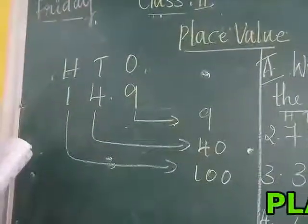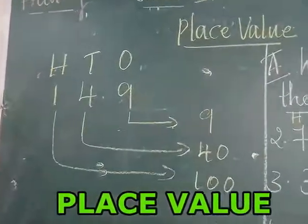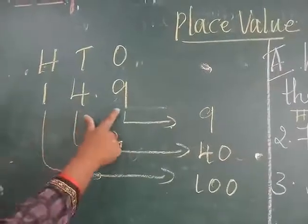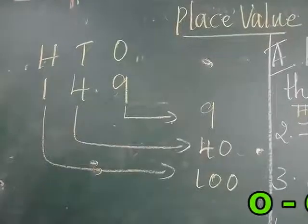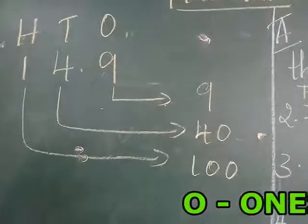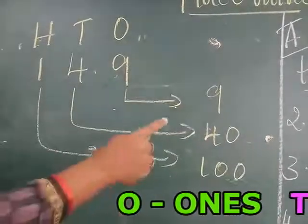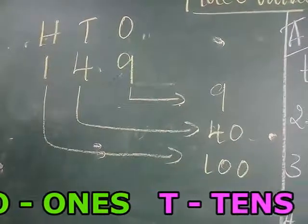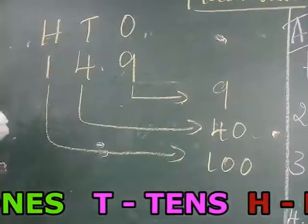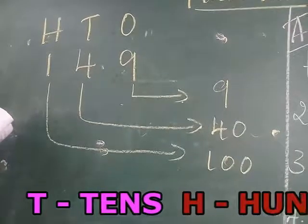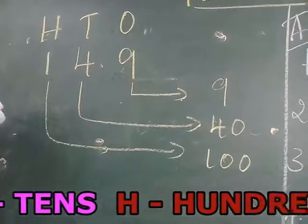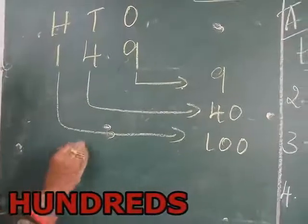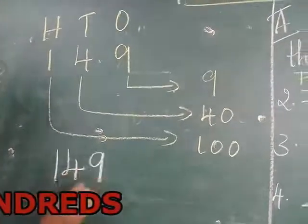Now we are going to learn about place value. If you see here, 149 is there. 9 is in 1's place — its place value is 9. 4 is in which place? 4 is in 10's place — its place value is 40. 1 is in 100's place — its place value is 100. Means it's 149.